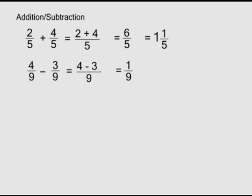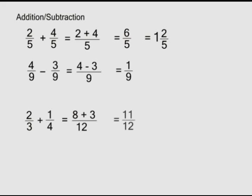If the denominators are different, we work with the LCM. For instance, two over three plus one over four: the LCM of three and four is twelve, so we write twelve as the denominator. Twelve divided by three is four; four times two is eight. Twelve divided by four is three; three times one is three. That gives us eleven over twelve.